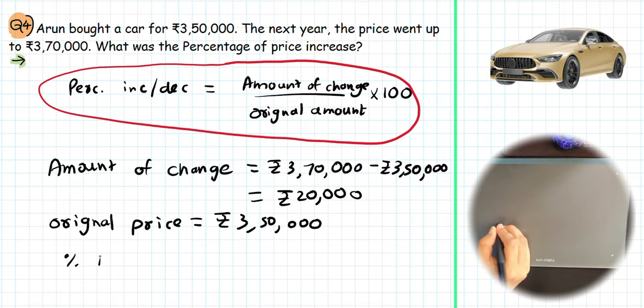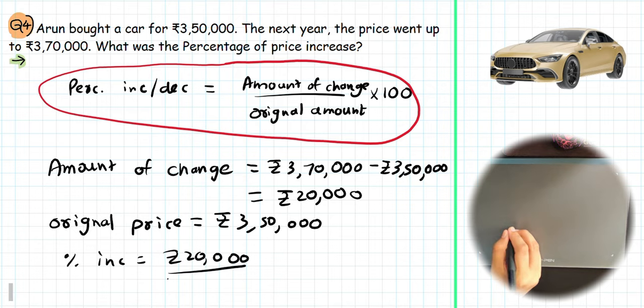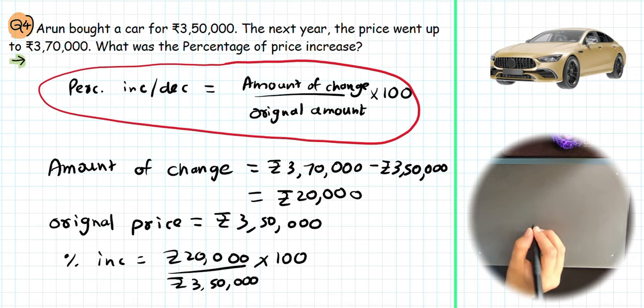Now the percentage increase equals amount of change, which is ₹20,000, divided by ₹3,50,000, the original price, and we multiply it by 100. So here, we can cancel four zeros from both 20,000 and 3,50,000 and simplify.